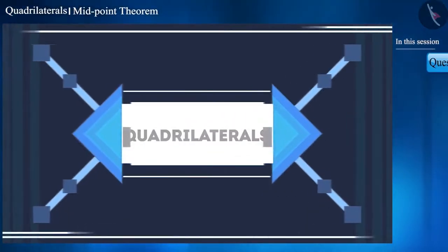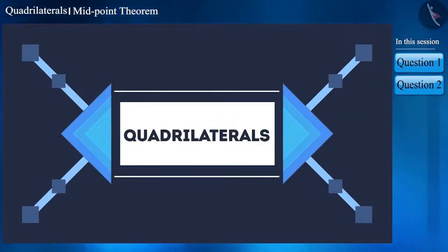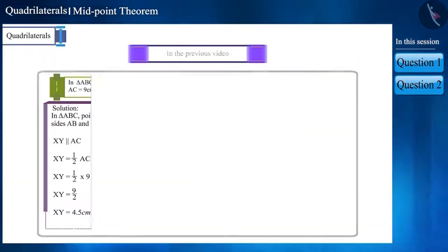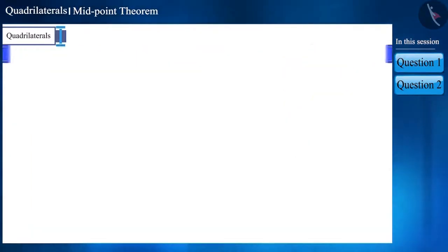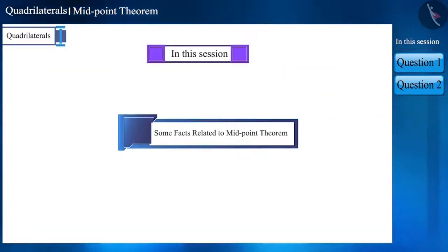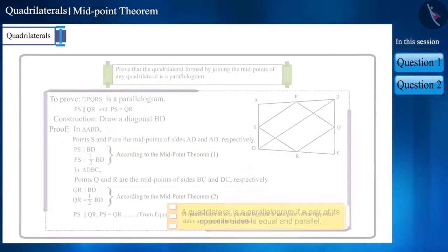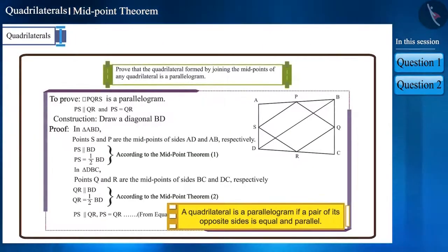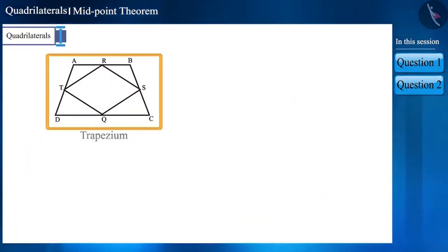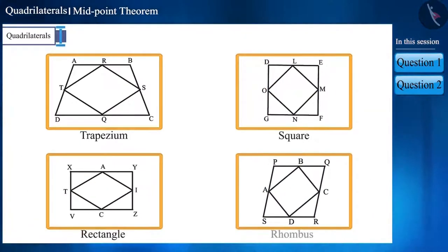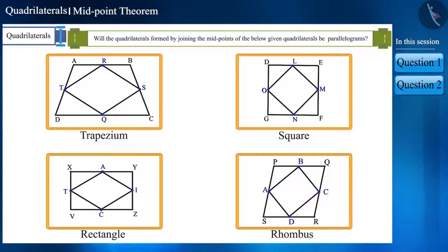Hello friends, welcome to this video on quadrilaterals. In the previous video we solved some questions related to the midpoint theorem. Today we will discuss some facts related to that. You may recall that in the previous video we proved that the quadrilateral formed by joining the midpoints of any quadrilateral is a parallelogram. So will the quadrilaterals formed by joining the midpoints of a trapezium, a square, a rectangle, and a rhombus also be parallelograms?